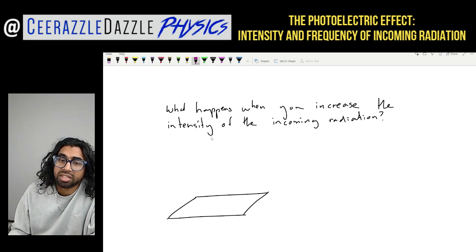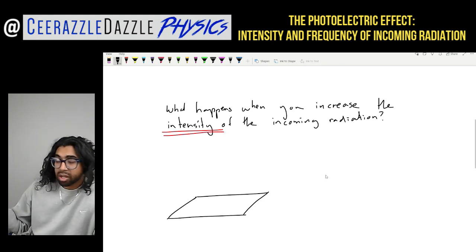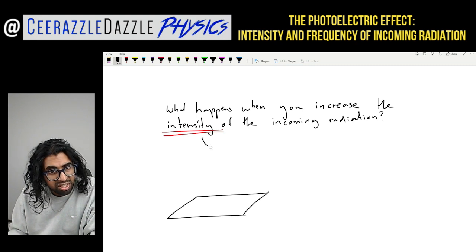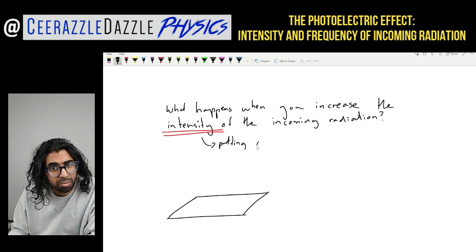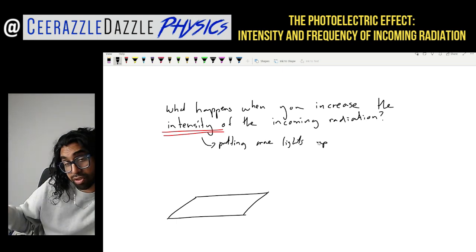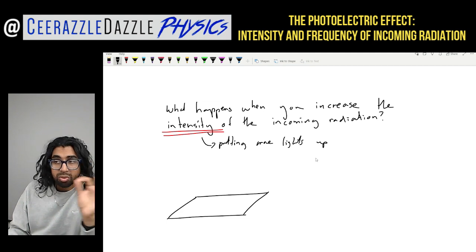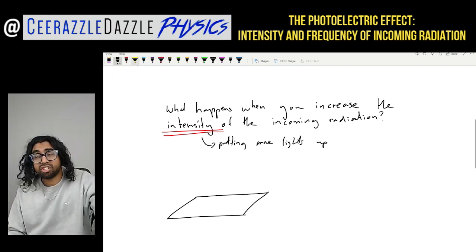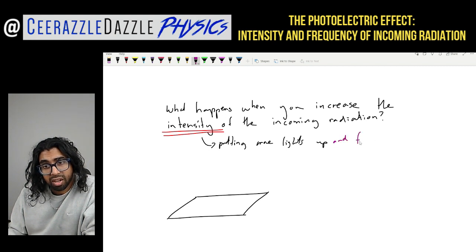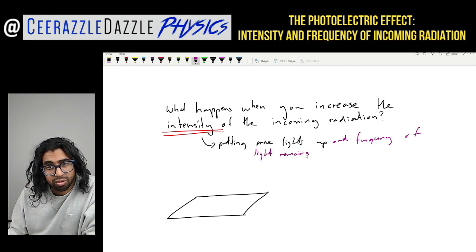So what happens when you increase the intensity of the incoming radiation? First, let's define intensity. If I were to increase the intensity in this room, I'm simply putting more lights up. Turning a light off reduces the intensity; turning it on increases it. Importantly, the frequency of the light remains the same — I'm not changing to a different light source, so the frequency of light remains constant.